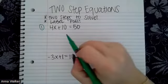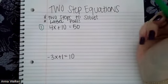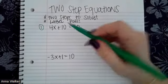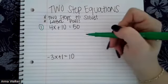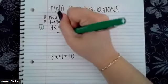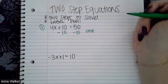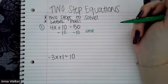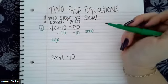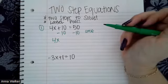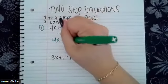The first thing I'm going to do is look at whether I need to combine any like terms. The answer is no. So the next thing I'm going to do is get rid of my constant. My constant is 10, and it is being added. So since I'm adding, I'm going to use the inverse operation — I'm going to subtract 10, or the ESPO property — and label it. So four X, then 10 minus 10 is zero, and that's equivalent to 50 minus 10, which is 40.